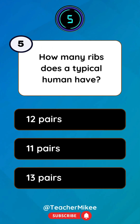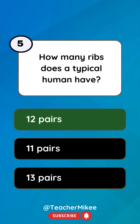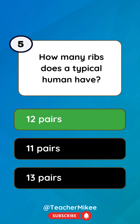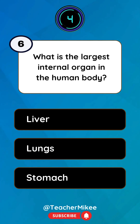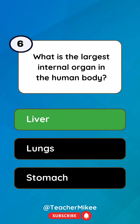How many ribs does a typical human have? 12 pairs. What is the largest internal organ in the human body? Liver.